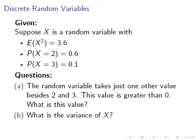We're given some more information. The random variable X takes just one other value besides 2 and 3. This value is greater than 0. What is this value? The second question is, what is the variance of X?